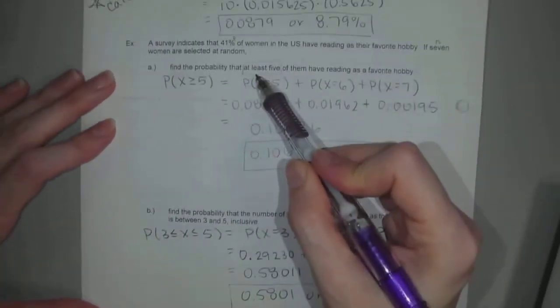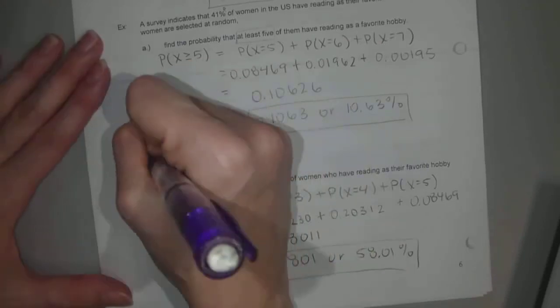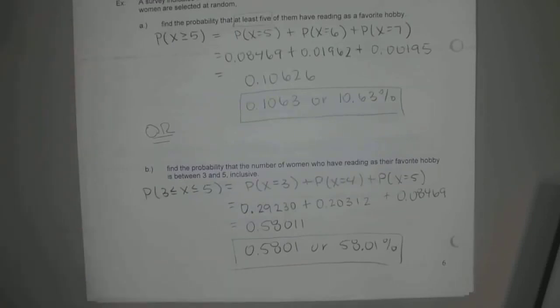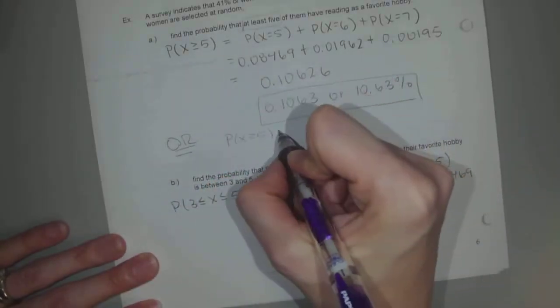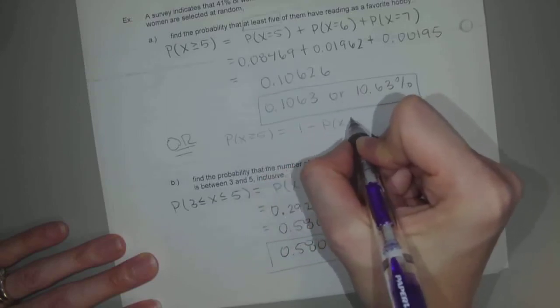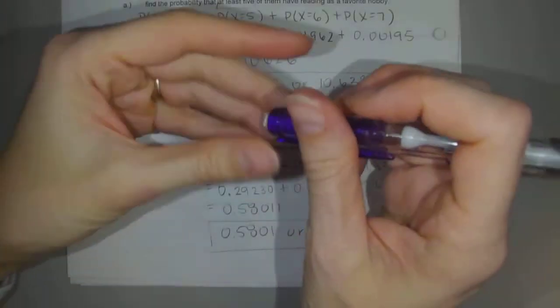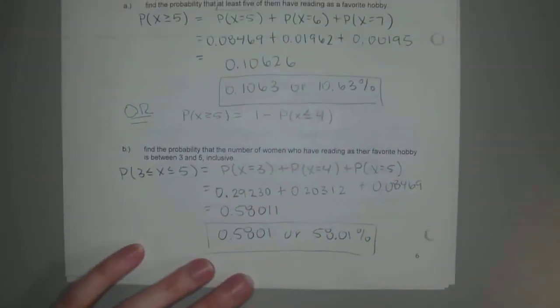So one way, you know how at least five was, that word at least was always the complement rule. The probability of X being greater or equal to five is the complement of one minus the probability of X being less than or equal to four. Do you guys agree that five and higher is the opposite of four and lower? You guys see what I'm doing there?